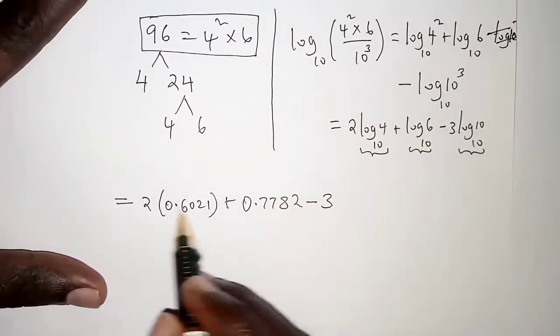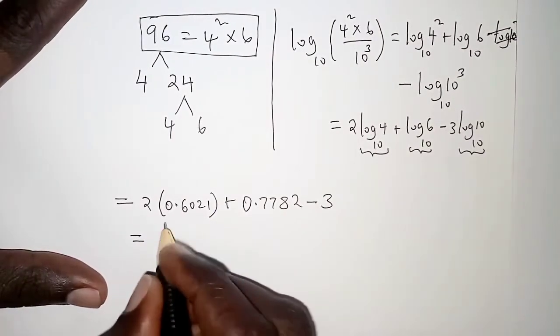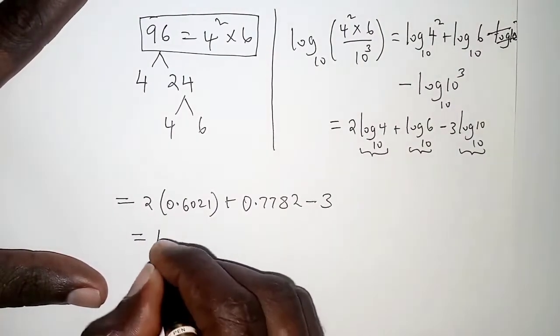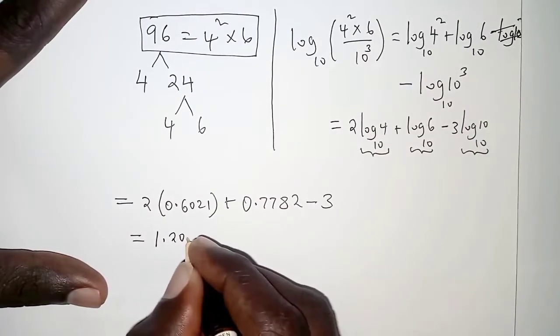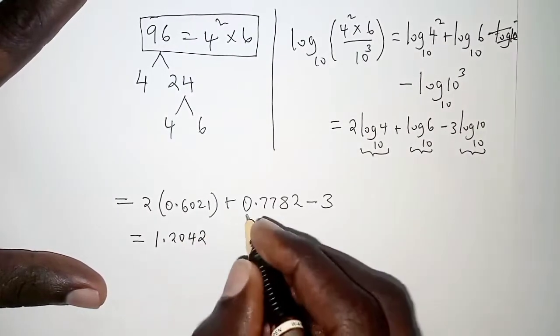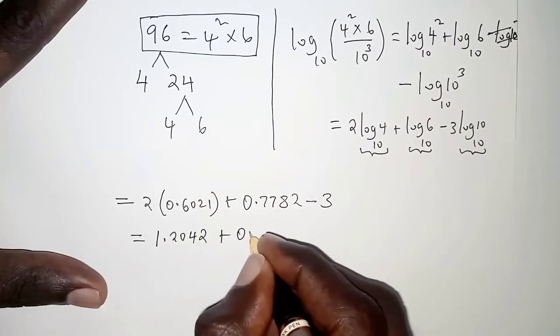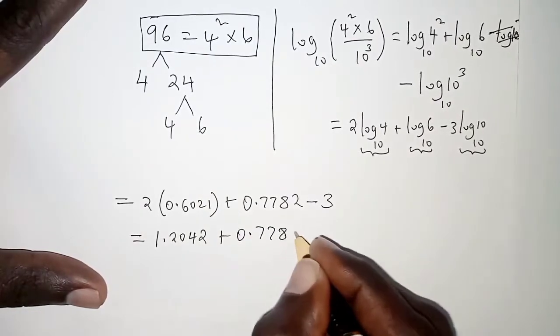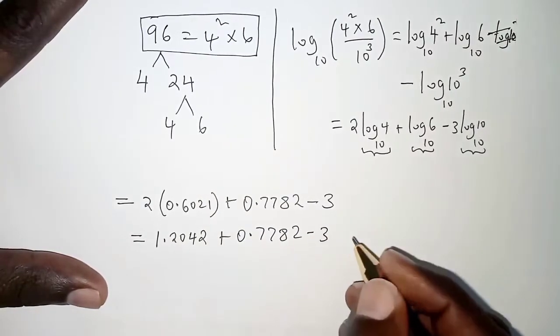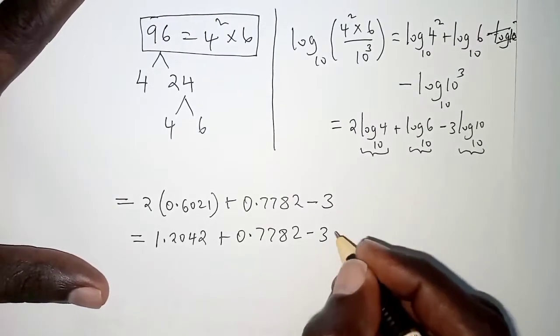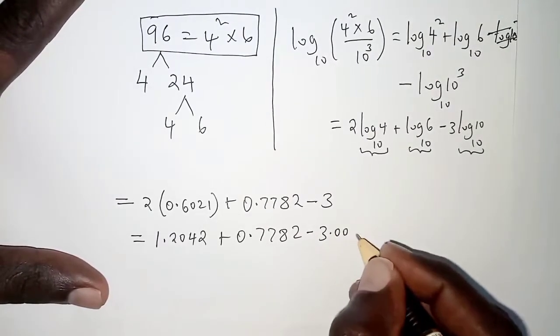When we multiply the first part, we have 1.2042, and then we add 0.7782. Let me express the 3 as 3.0000.